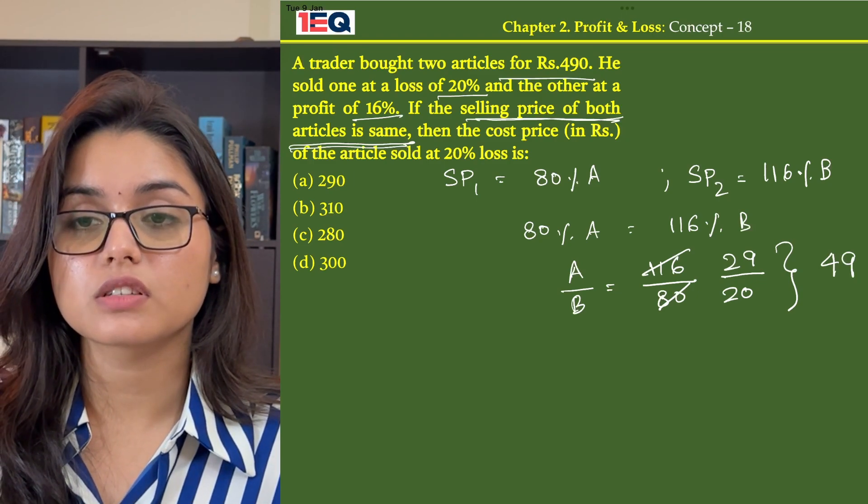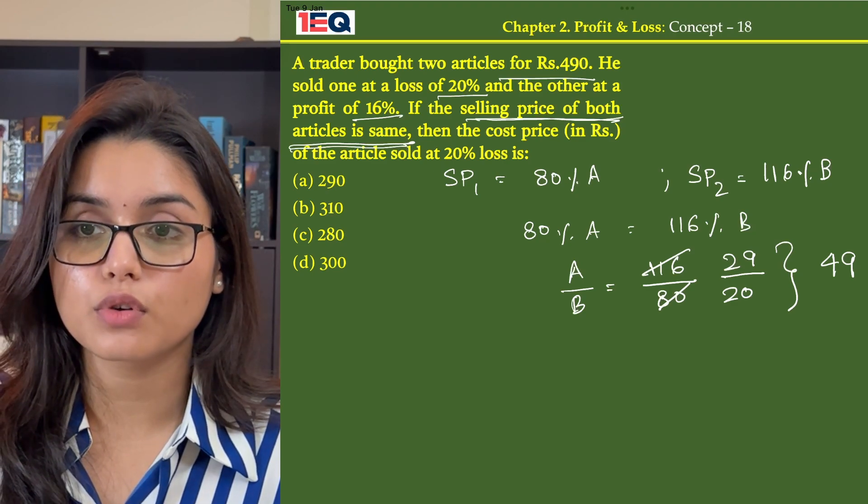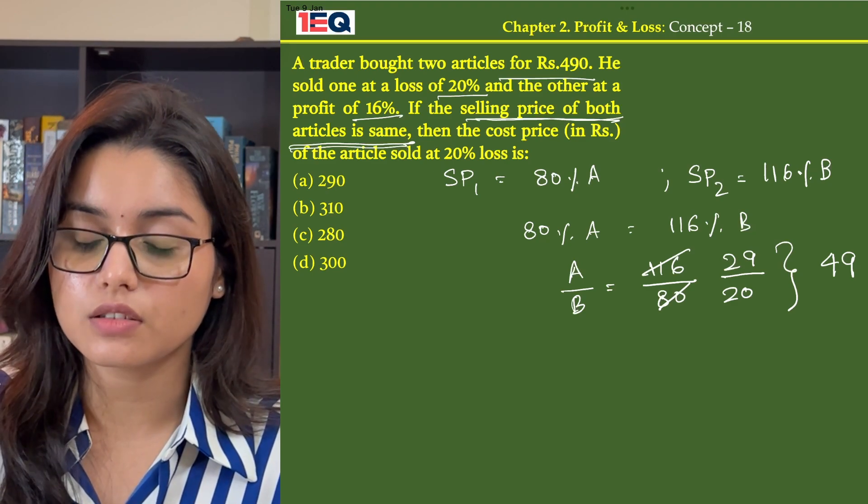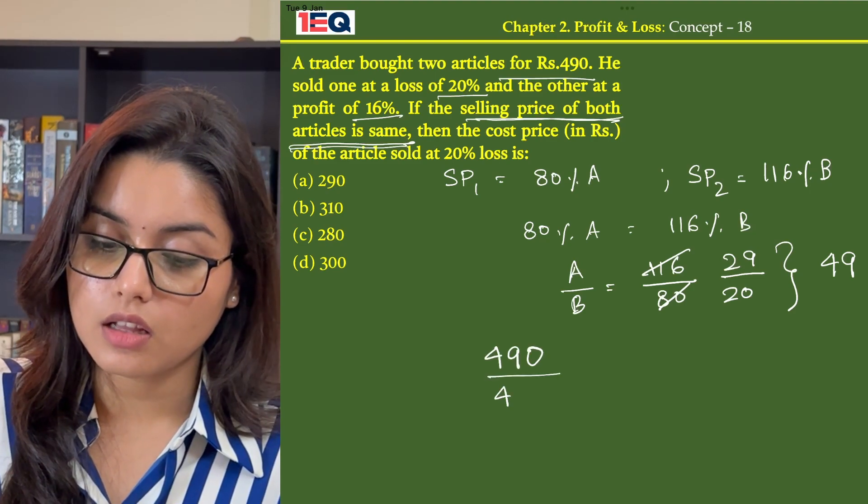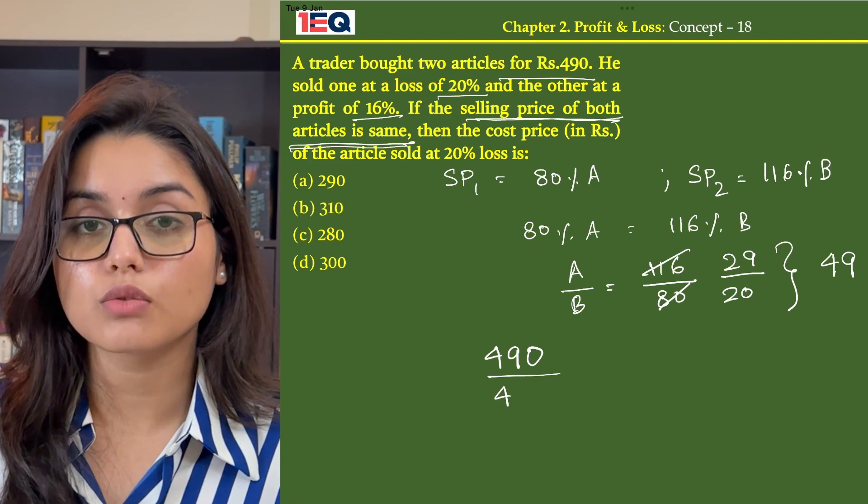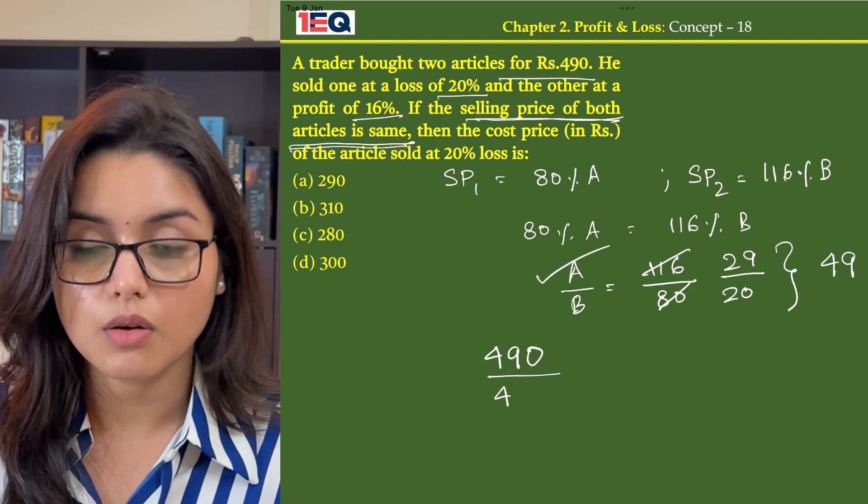In the question they say that a trader bought two articles for Rs.490. So the total cost price here is Rs.490. And we are asked to find the cost price of the article sold at a loss of 20%, that is of article 1.